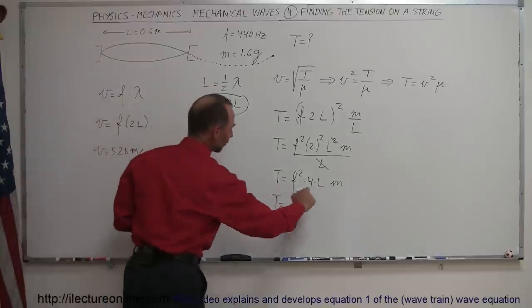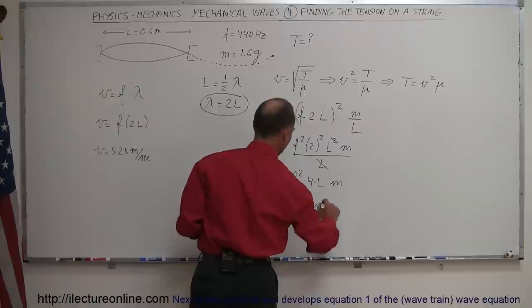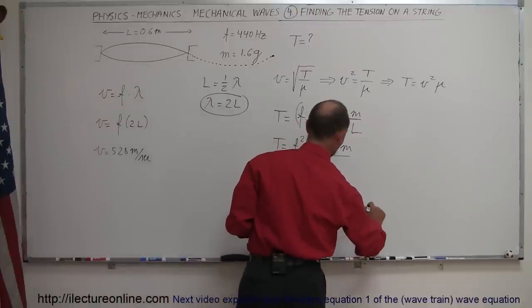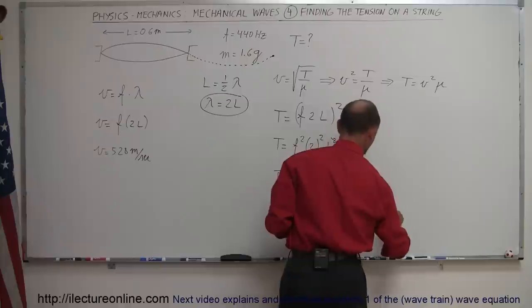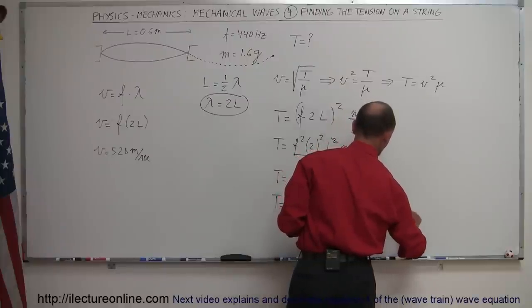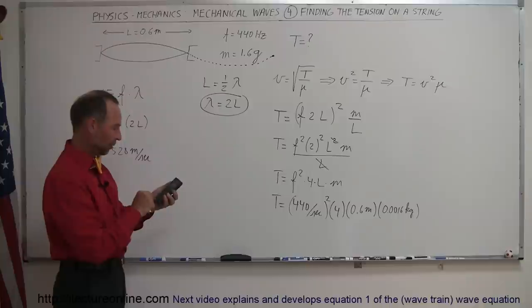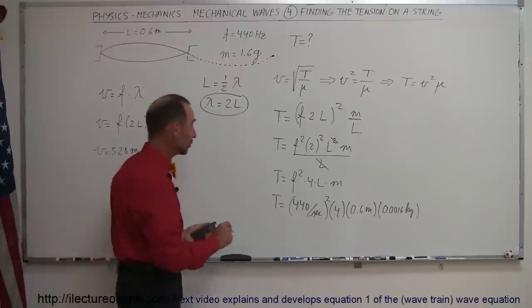And then we plug these numbers in here. We get 440 Hertz per second, and we have to square that, times 4, times the length which is 0.6 meters, and times the mass which is 1.6 grams converted to kilograms, which is 0.0016 kilograms. Alright, 440 we square that, times 4, times 0.6, and times 0.0016 equals, and we get a tension of 743 Newtons.